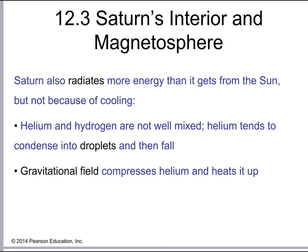There's another way that Saturn is similar to Jupiter: Saturn also radiates more energy into space than it receives from the Sun, but this is from a different mechanism than Jupiter. Basically, the helium and hydrogen in Saturn are not well mixed, and the helium tends to condense into droplets and fall. As they fall, Saturn's strong gravity compresses and condenses them, creating a friction-type heating that heats up the interior of the planet.